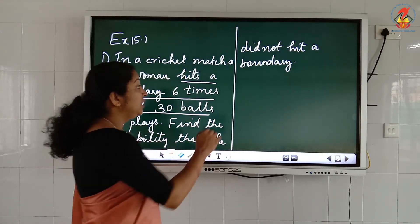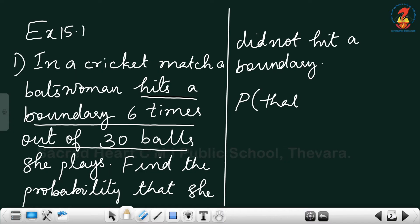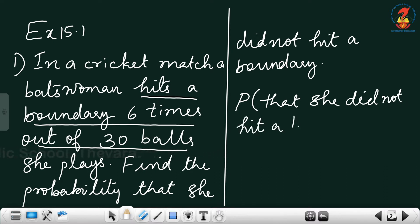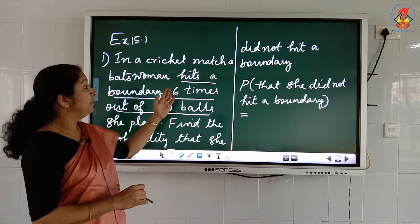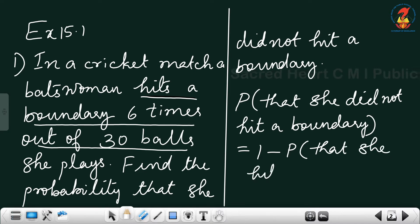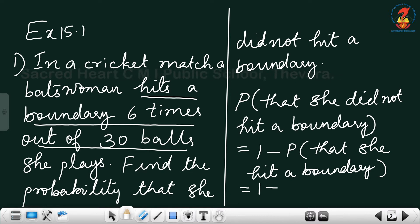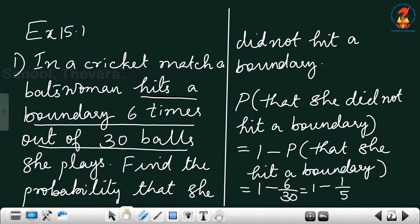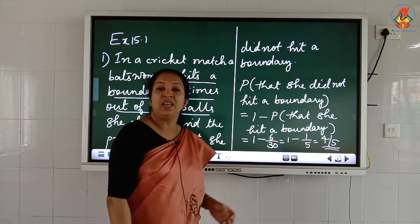The probability that she did not hit a boundary is the complement of the probability that she hits a boundary. So it equals 1 minus the probability she hits a boundary, which is 1 minus 6/30, equal to 1 minus 1/5, which equals 4/5.